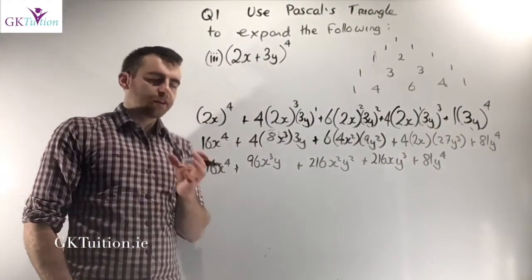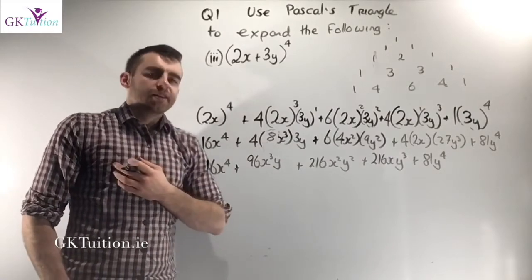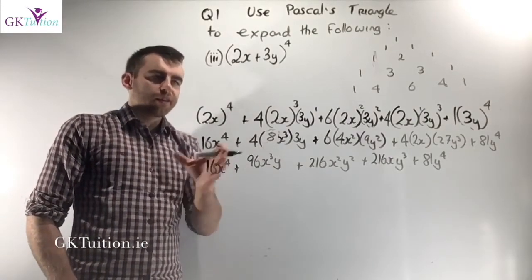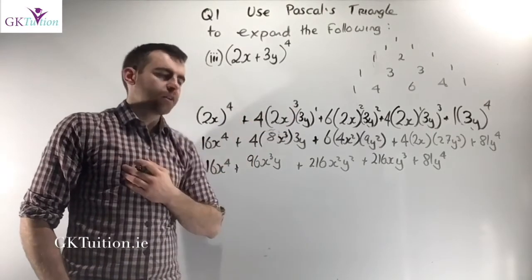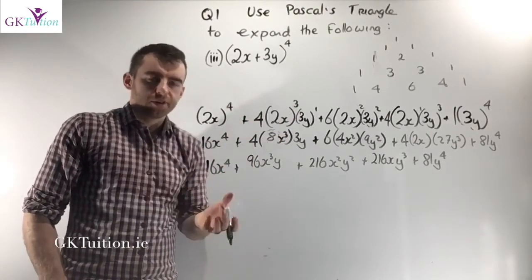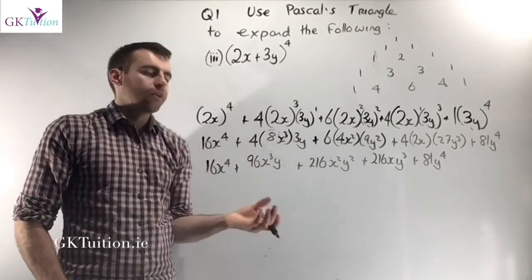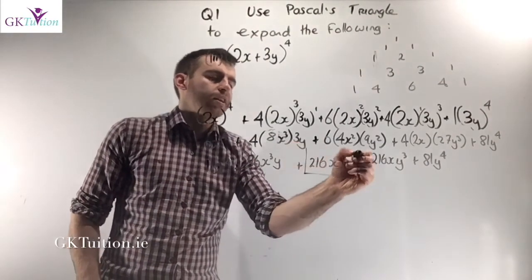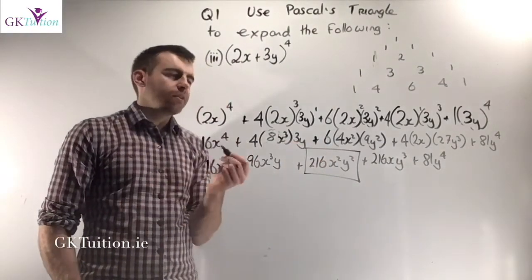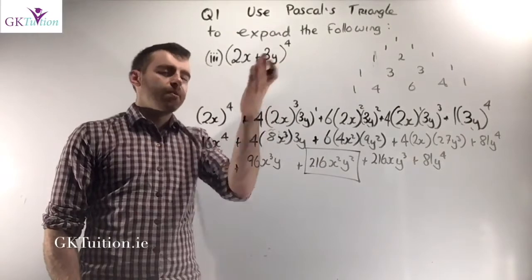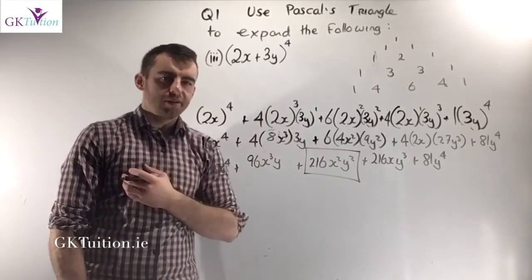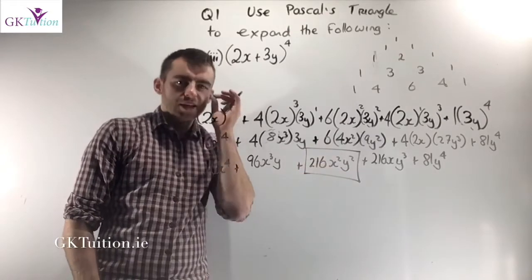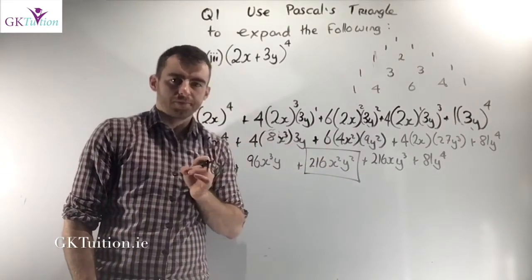They're quite tricky. The way an exam question is likely to come up, rather than asking you to expand the whole lot, they might ask you to find the third term, or find the term that has an x squared in it — in this case, that would be 216x²y². But even if it's to the power of 4, I still think your life is easier if you find all five terms and then identify which one you're looking for.